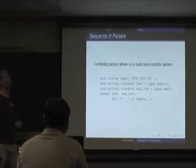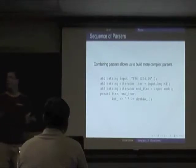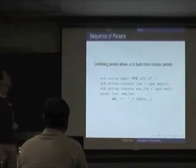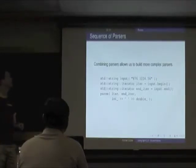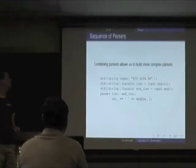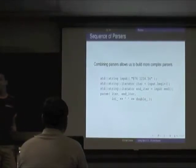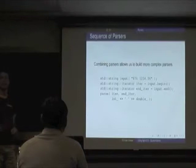We put our atoms together to build larger parsers. Here I'm going to parse 876 as an integer, a literal space, and a double. The right-shift operator is what we use to string things together — read it as: parse an int, followed by a literal space, followed by a double. That's the sequence operator.